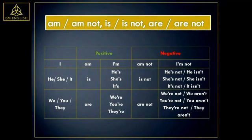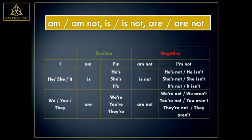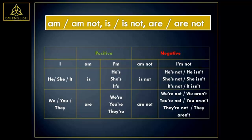Let us learn the rules for am, is and are. With the pronoun I, we use am. I am. Negative: I am not. With the pronouns he, she and it, we use is. He is, she is. Negative: he is not or he isn't, she is not or she isn't, it is not or it isn't. With the pronouns we, you and they, we use are. We are, you are, they are. Negative: we are not or we aren't, you are not or you aren't, they are not or they aren't.